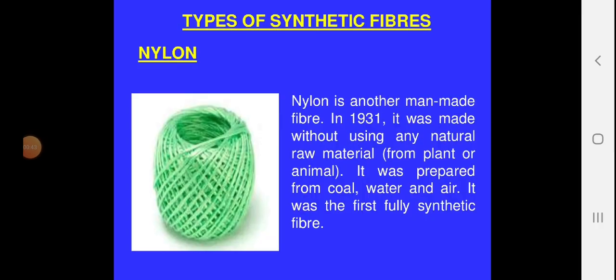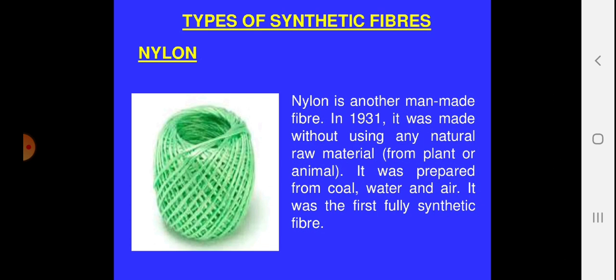In the types of synthetic fiber, the second fiber we are going to discuss today is nylon. You can see in the picture, and you might have seen the nylon string at your home. Generally, these nylon strings are quite durable and very strong. We use nylon string for drying our clothes and even for holding or lifting many other objects at home. I have seen my neighbor using nylon string for lifting a bucket from the ground floor to the first floor.